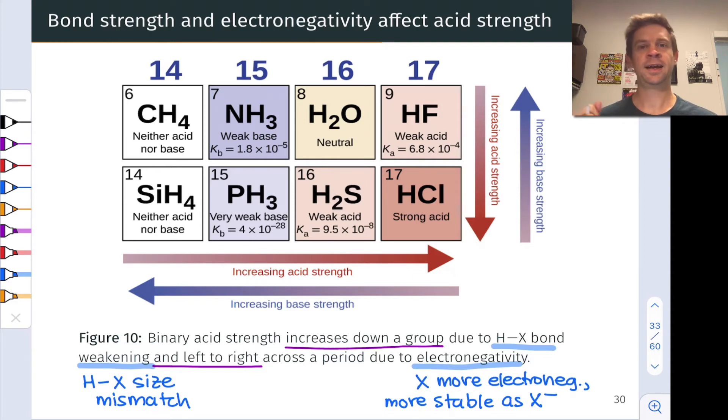So for binary acids, to summarize, it's a size effect moving down with larger X atoms, generally more acidic in HX than smaller X atoms, and it's an electronegativity thing as we move left to right across the periodic table with more electronegative atoms being associated with stronger acids.